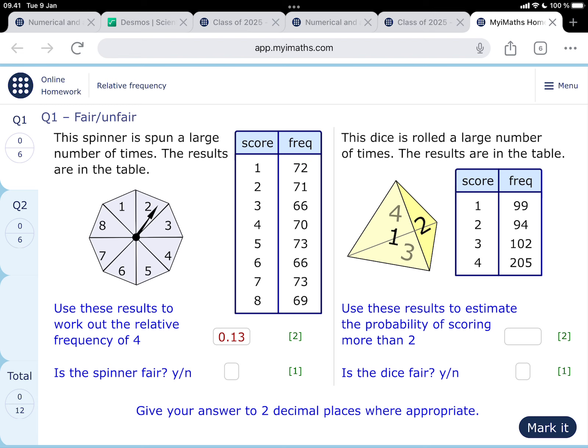And I've just noticed at the bottom, give your answer to two decimal places where appropriate, so that's all good. This dice, or this die it should say, is rolled a large number of times. The results are in the table and you've got a four-sided pyramid thing, and then you're getting a 1, 99 times, a 2, 94 times, a 3, 102 times, and a 4, 205 times. So a lot more.